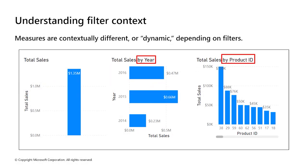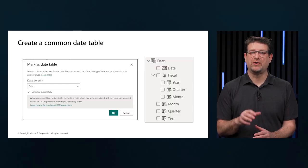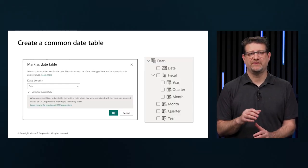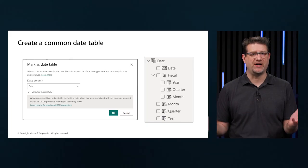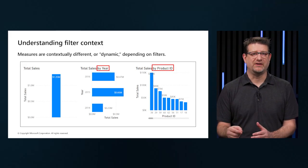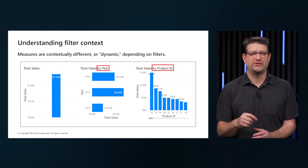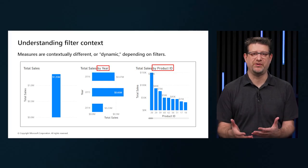Filter context in DAX refers to the set of filters applied to data, influencing how calculations and measures are computed and displayed. For example, these three visuals use the exact same DAX measure: total sales. The first visual shows total sales without any filters. The second is filtered by year, and the third is filtered by product ID, meaning total sales and product ID are both on the visual.